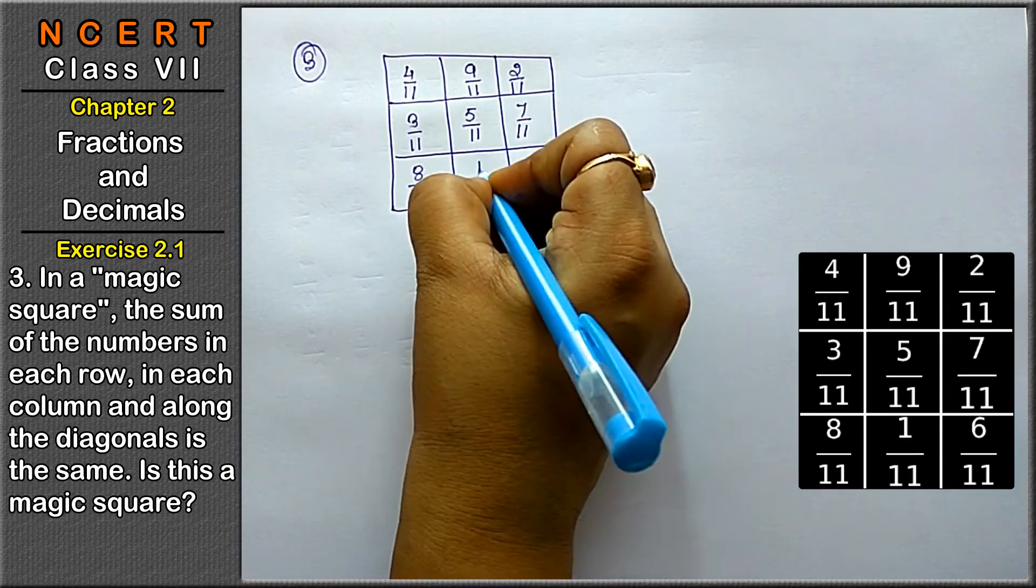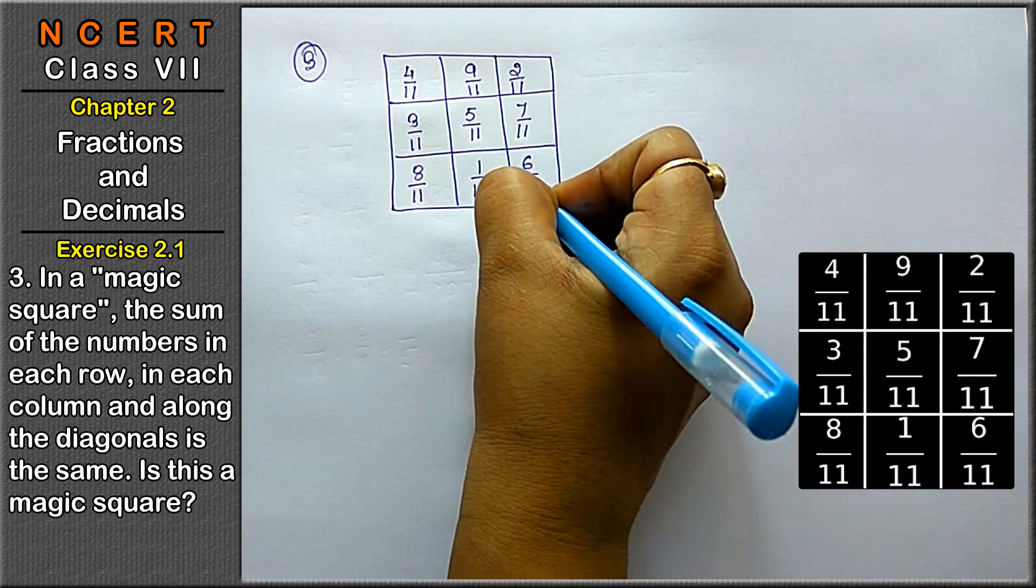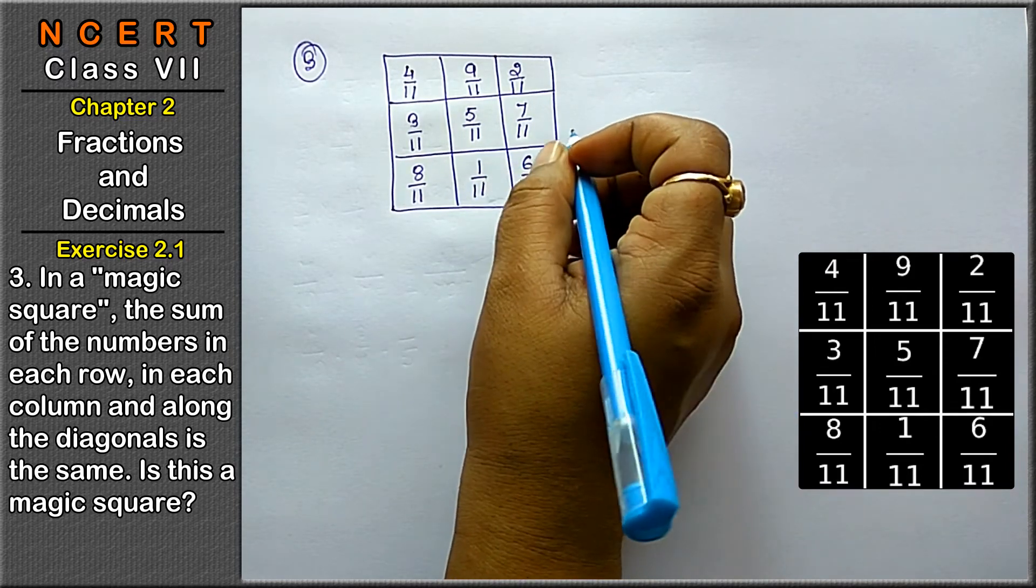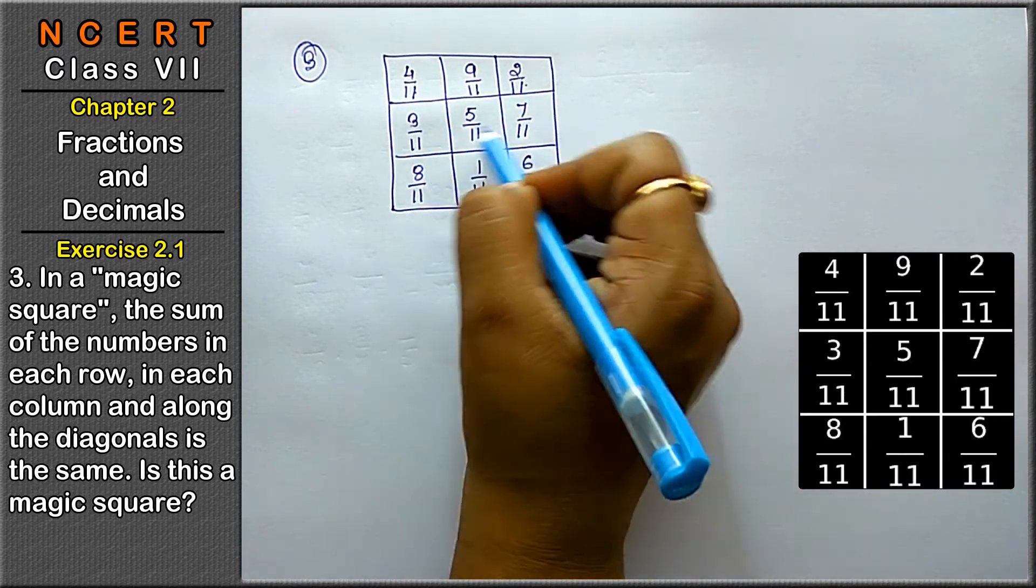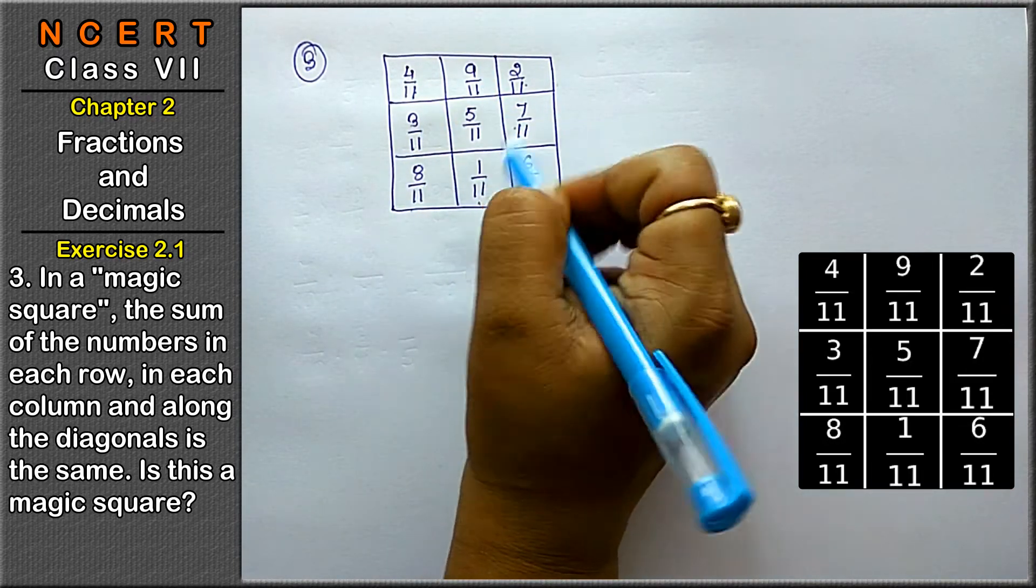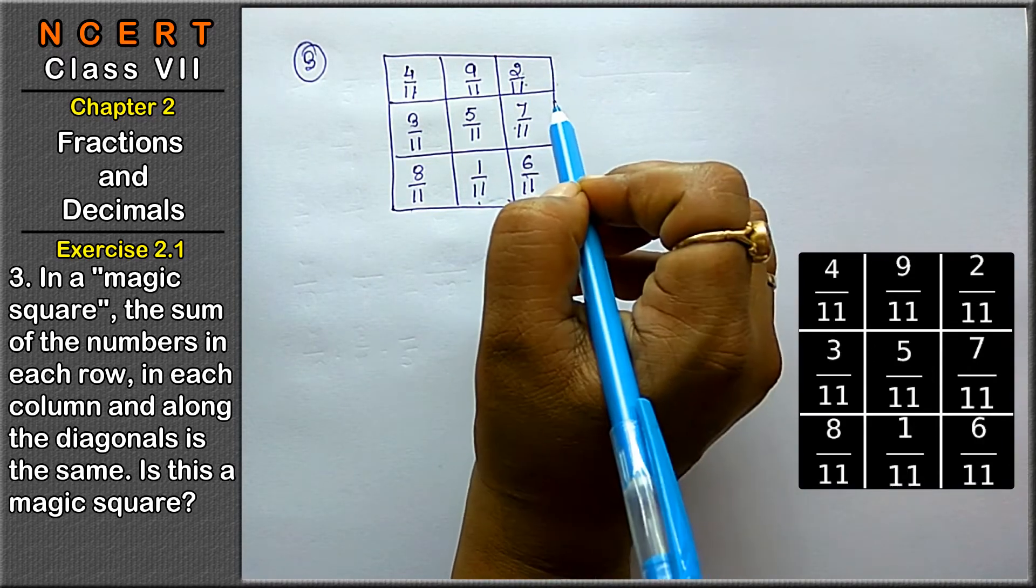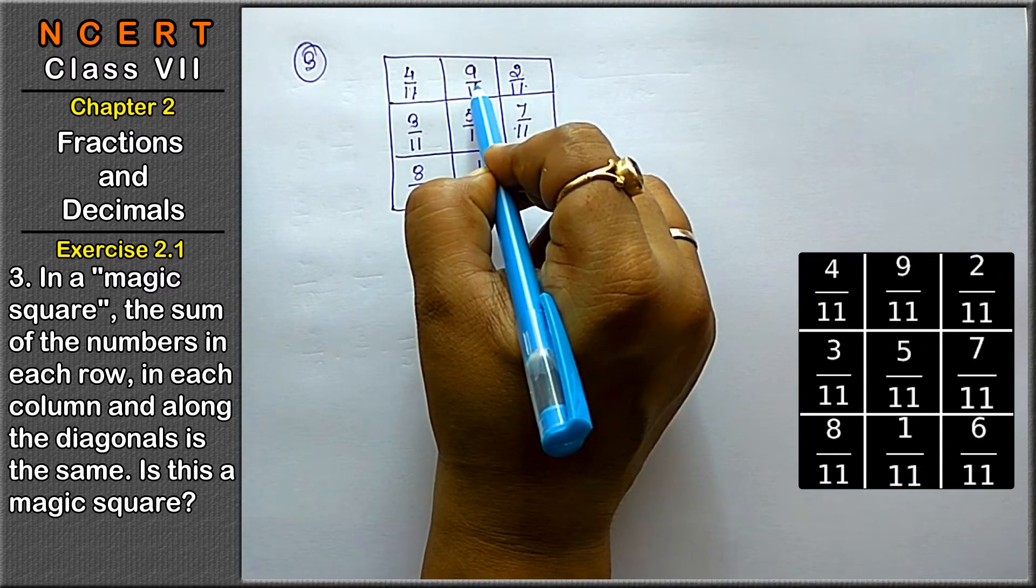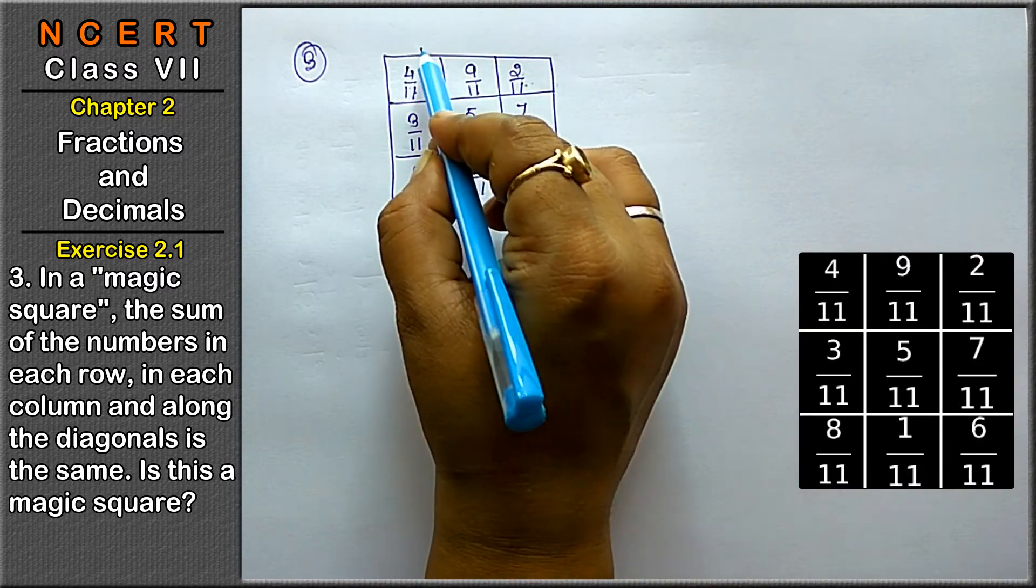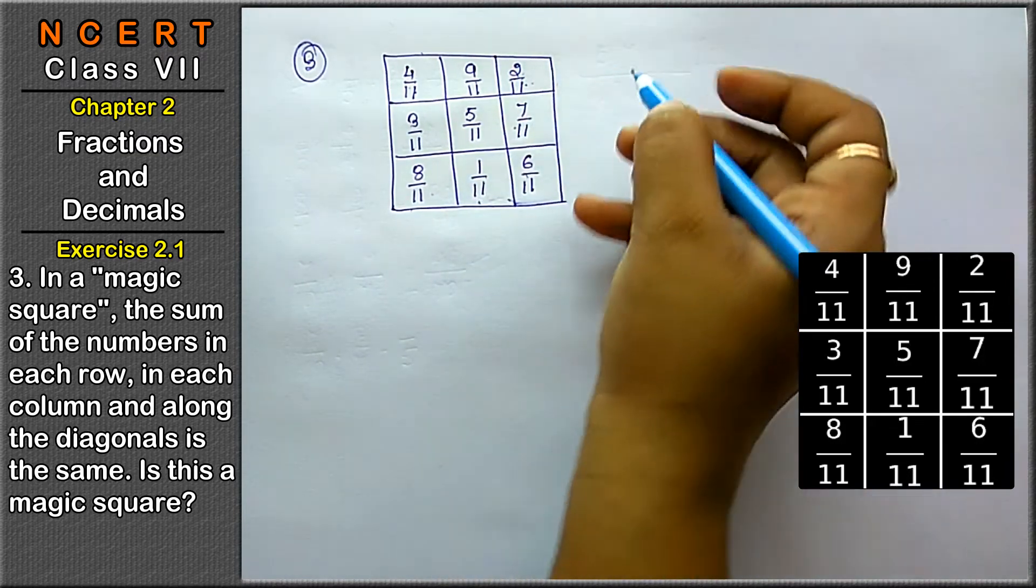Friend, magic square ka matlab hota hai ki ham isko row wise add karay ya column wise add karay, the answer will be same. This is called the magic square. I repeat, agar ham isko row wise add karay ya column wise add karay, the answer will be same. Let's see how.